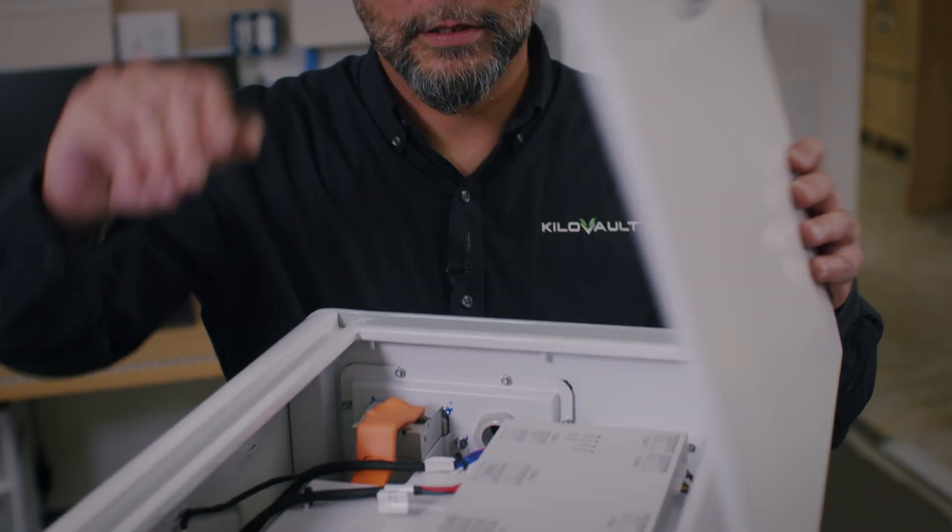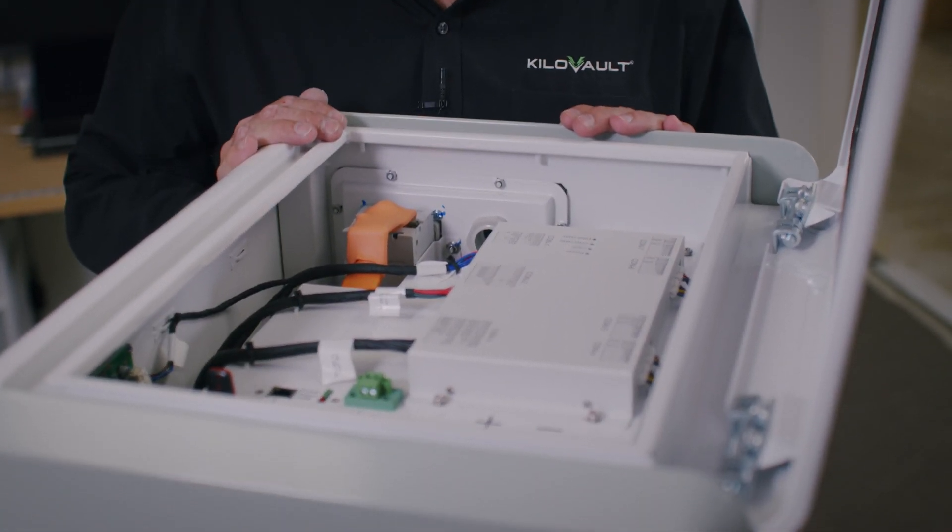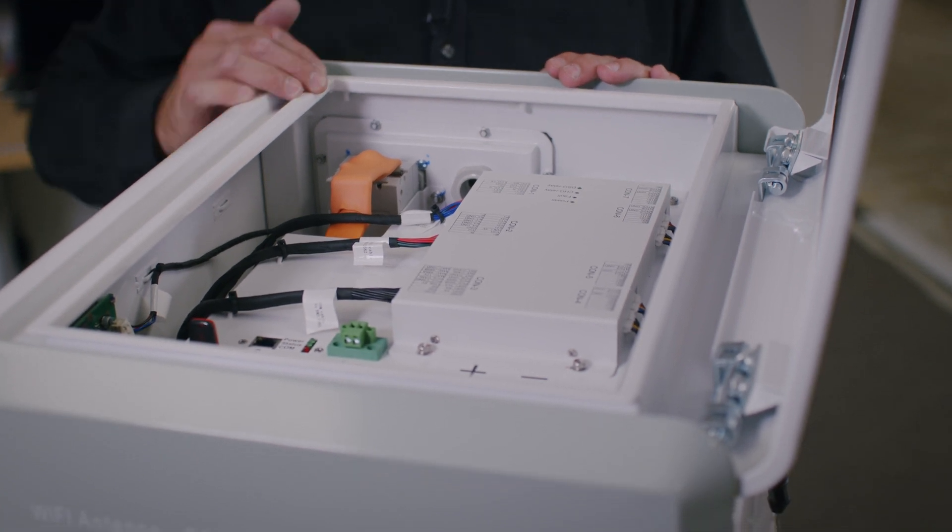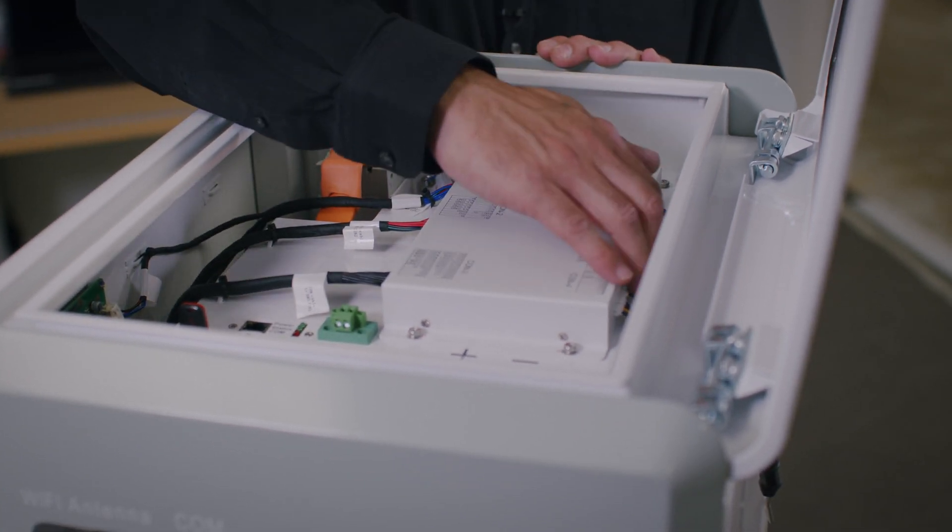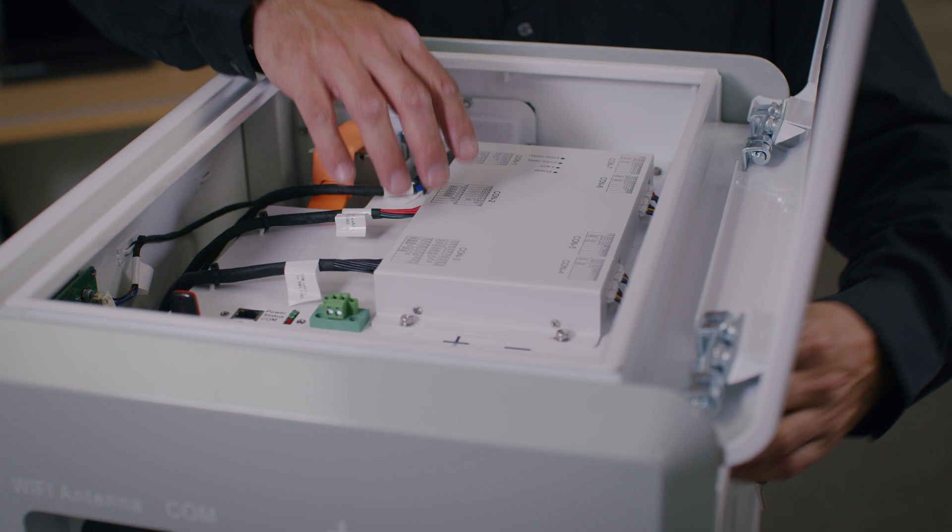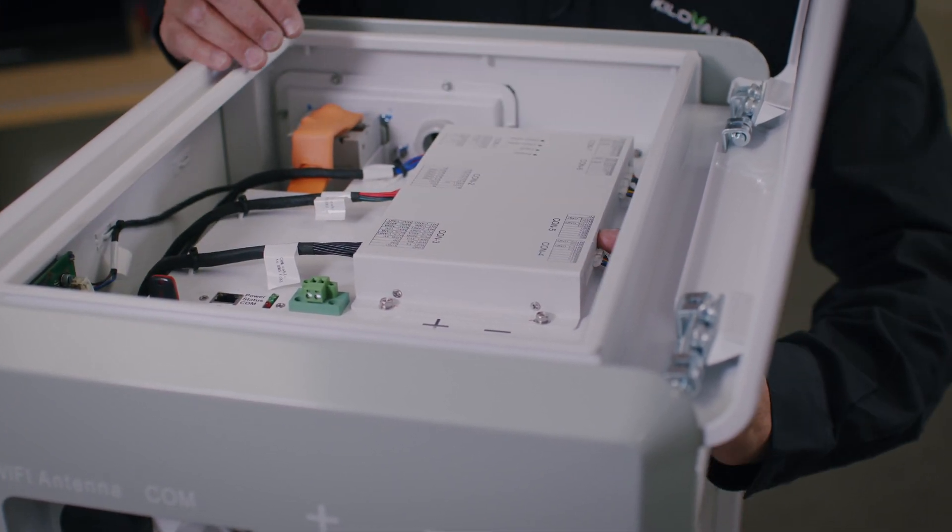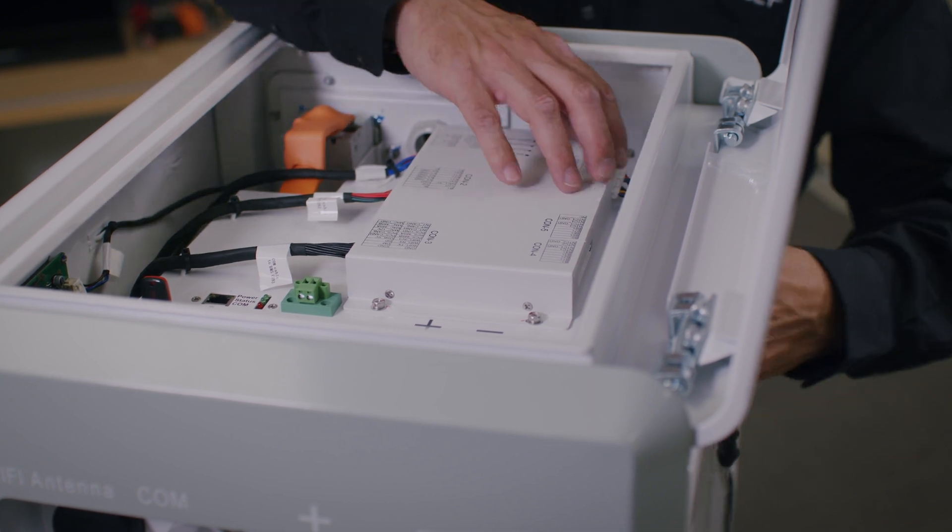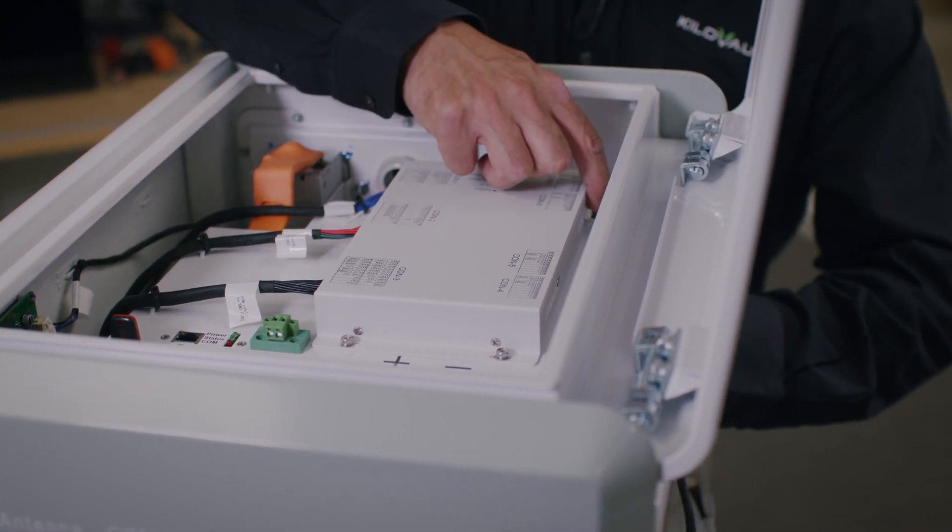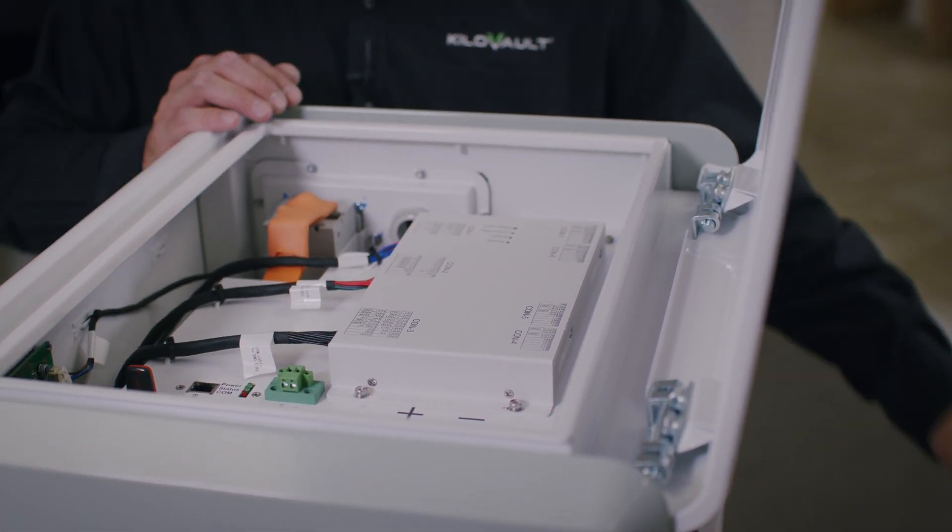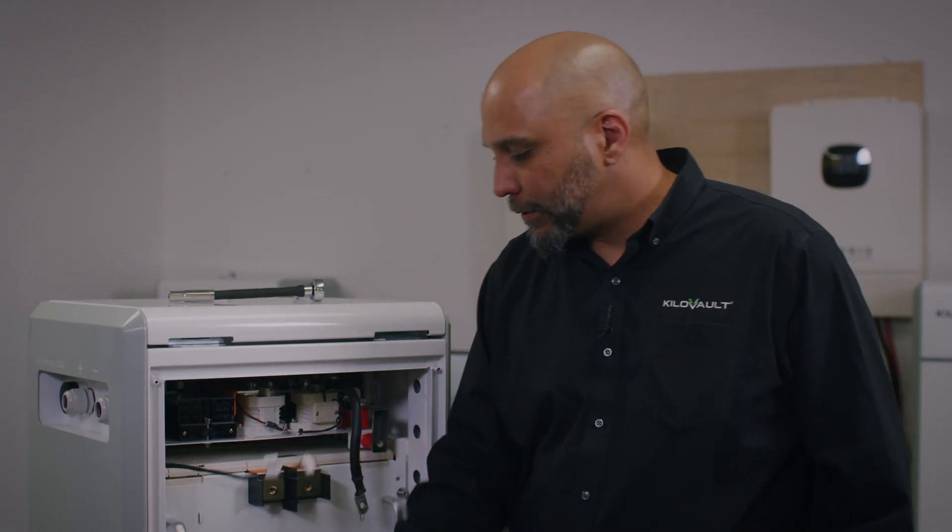We just finished removing all the bus bars, the bolts and the bus bars. Next is to open up this compartment. Inside we're going to disconnect the modules from the actual BMS. Here you'll see four cables on the back of the BMS that will need to be disconnected, just disconnect one by one. Now all the modules are completely disconnected from the BMS.